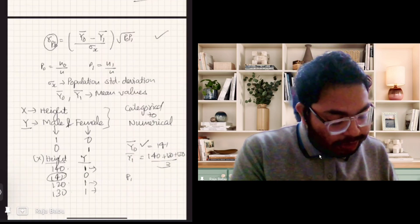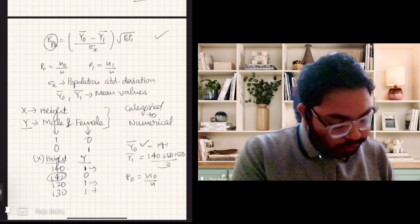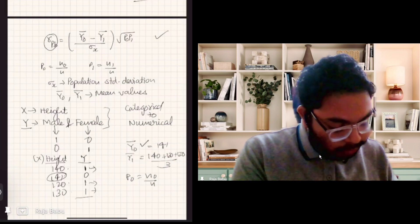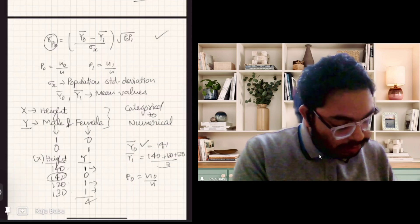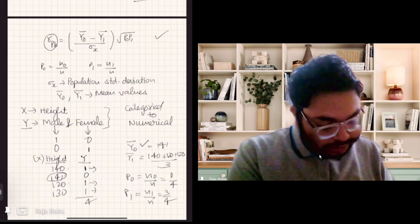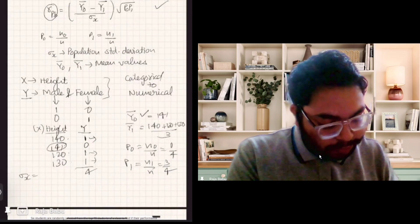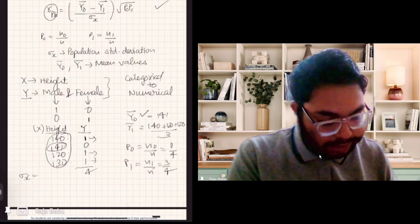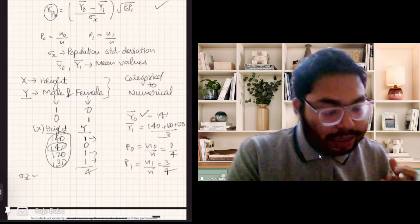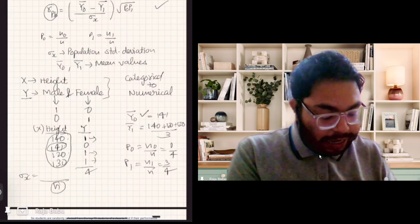P-zero is the ratio of N-zero by N, where N-zero means the number of zeros. So out of four values, one is zero, so P-zero is one by four. Similarly, P-one is N-one by N — there are three ones, so P-one is three by four. Sigma-X is the population standard deviation. We have to calculate the standard deviation of the continuous quantity. Note that for population standard deviation we use N, and for sample standard deviation we use N minus one in the denominator.